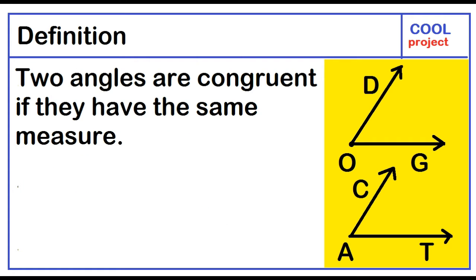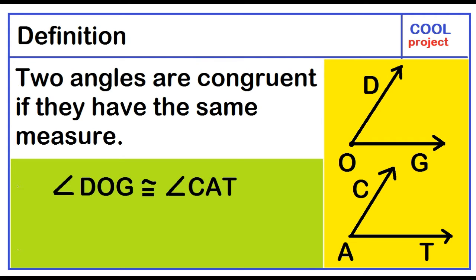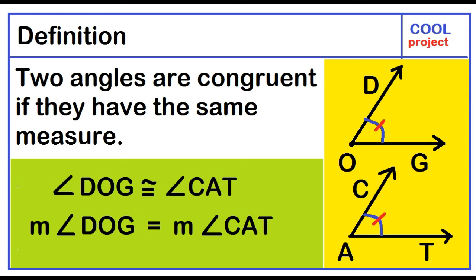Two angles are congruent if they have the same measure. If angle DOG is congruent to angle CAB, then the measure of angle DOG is equal to the measure of angle CAB.